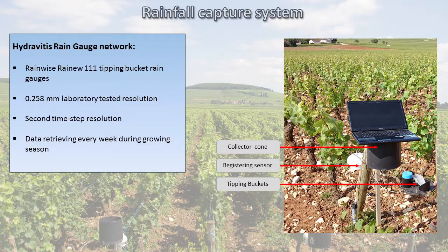The rain gauge network is located just north of the city of Beaune. Every rain gauge is a 0.1-tipping bucket rain gauge. We tested the resolution of these rain gauges and obtained a resolution of 0.258 millimeters. We linked these rain gauges to a registering sensor placed under a shelter, which allowed a one-second time step resolution for rainfall registering and also registered temperature. Data retrieval is made every week during the growing season in order to avoid clogging events, or if a grower breaks a rain gauge during activity, we can replace it as soon as possible.